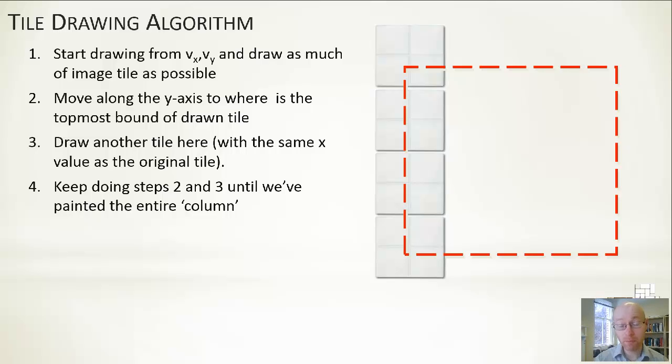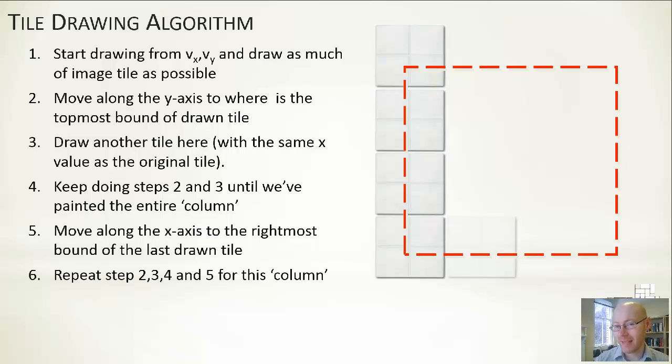Having done that, we've done one column. Now we can go on to the next column. We go back down to the bottom, starting on a Y location down at the bottom, but we're moving along the X axis of our viewport to the location we finished on drawing from the previous column.